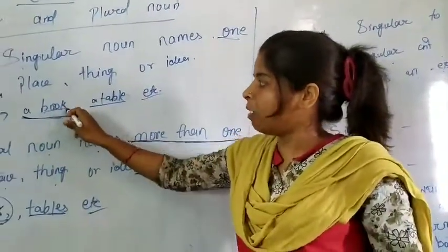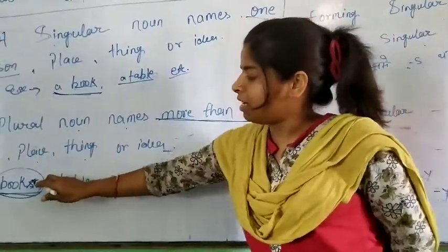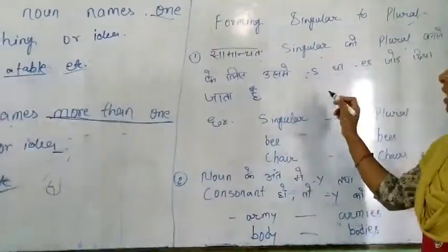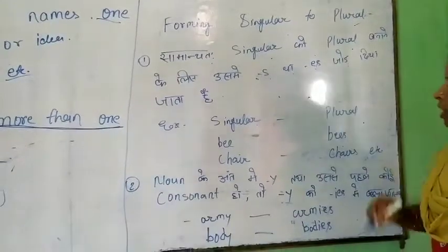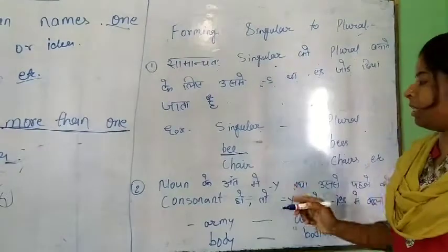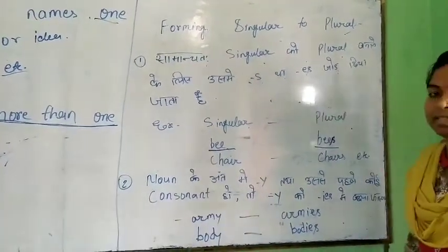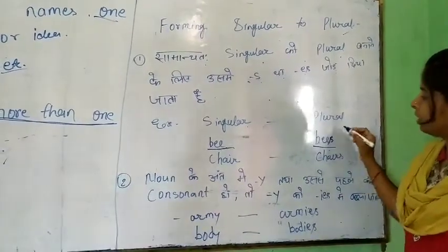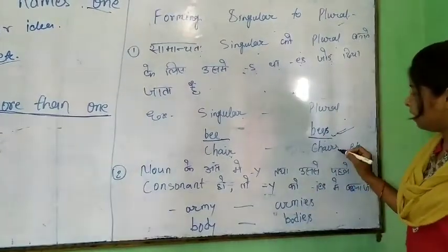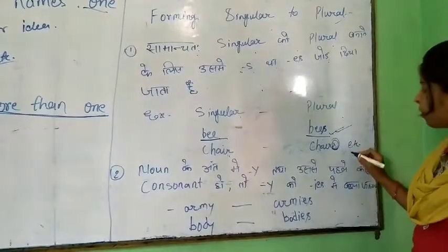For example, see: 'book' — this is singular noun. But 'books' — isme humne 's' joda, toh yeh ho gaya aapka plural noun. Similarly, 'bee' — ek madhumakhi, that means singular. And 'bees' — last word is having 's', this is your plural noun. 'Chair' — it is singular. Next, 'chairs' — last mein humne 's' joda, isse ho gaya aapka plural noun.